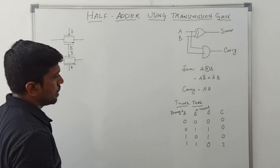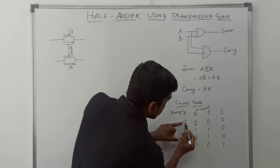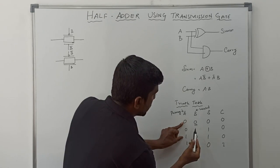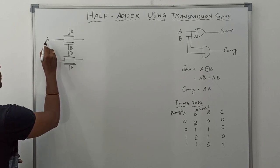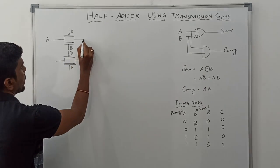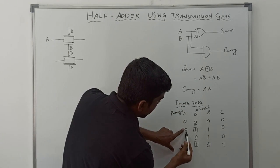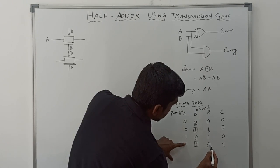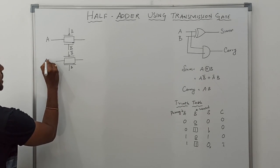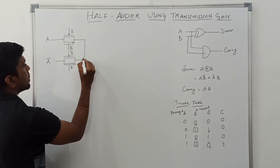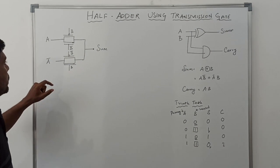Let us consider B value is 0. When B=0: A=0 gives sum=0, A=1 gives sum=1 — so when B equals 0, sum equals A. So the first transmission gate is connected to input A. Next case, when B=1: A=0 gives sum=1, A=1 gives sum=0 — just the complement of A. So the second transmission gate is connected to Ā. Short the two outputs of the transmission gates to get the result sum.